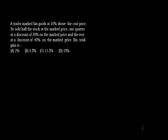Let's discuss a few problems on profit and loss. These problems will help you in NTC examinations. The first problem: a trader marked his goods at 20% above the cost price. He sold half of the stock at the market price, one quarter at a 20% discount on the market price, and the rest at a discount of 40% on the market price. We have to calculate the total gain of the trader.